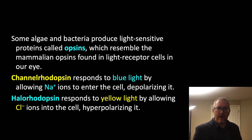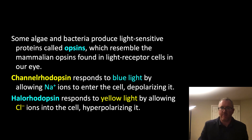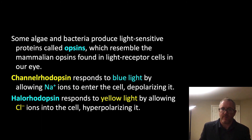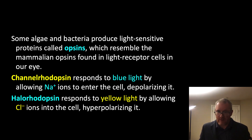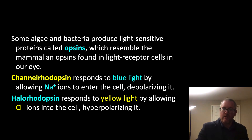Some algae and bacteria produce light-sensitive proteins called opsins, which resemble the mammalian opsins found in light receptor cells in our eye. Channelrhodopsin responds to blue light by allowing sodium ions to enter the cell, leading to depolarization. By contrast, halorhodopsin or archaeorhodopsin respond to yellow light — and also quite a lot to green light — by allowing chloride ions into the cell, which hyperpolarizes it. So halorhodopsin inhibits the cell, whereas channelrhodopsin excites it.